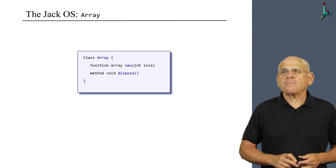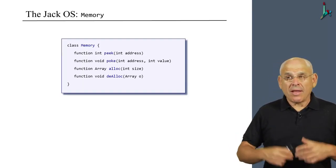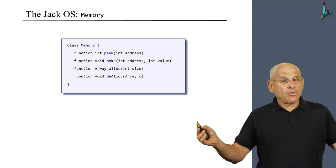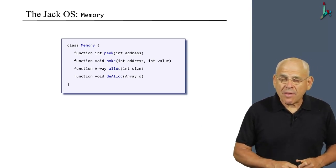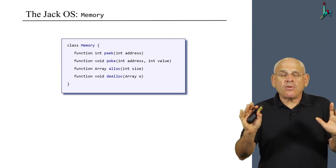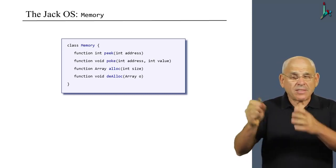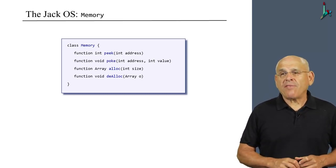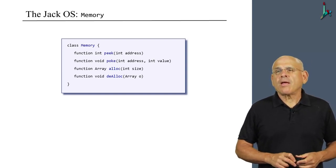We also have a memory class that allows Jack programs to access the host RAM directly. You do it using peek and poke methods, which are highly dangerous, obviously. Because you can get into all sorts of addresses that you shouldn't play with - addresses that are perhaps in the stack or some pointers. So it's up to you to use these functions with great caution. We also provide the alloc and de-alloc functions, which are used to create memory blocks and dispose them when they are no longer needed.